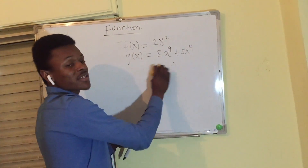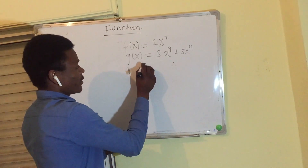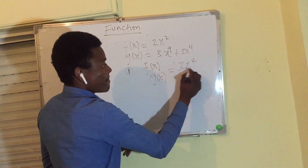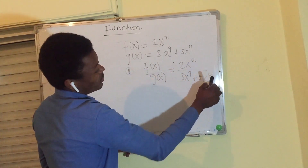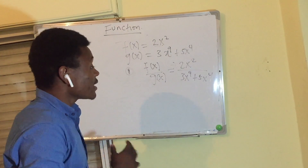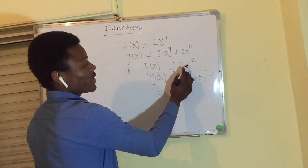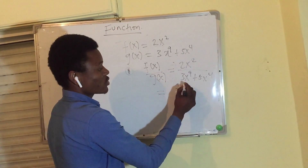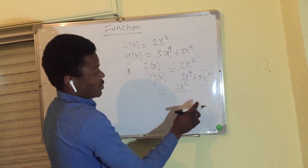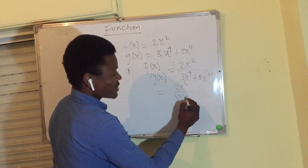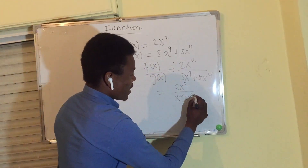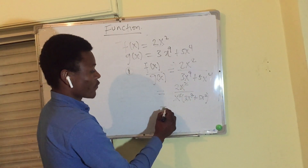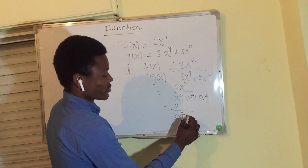For division, f of x over g of x: f of x is 2x squared, and g of x is 3x to the power of 9 plus 5x to the power of 4. Simplifying by dividing, we get 2 over 3x to the power of 7 plus 5x squared.